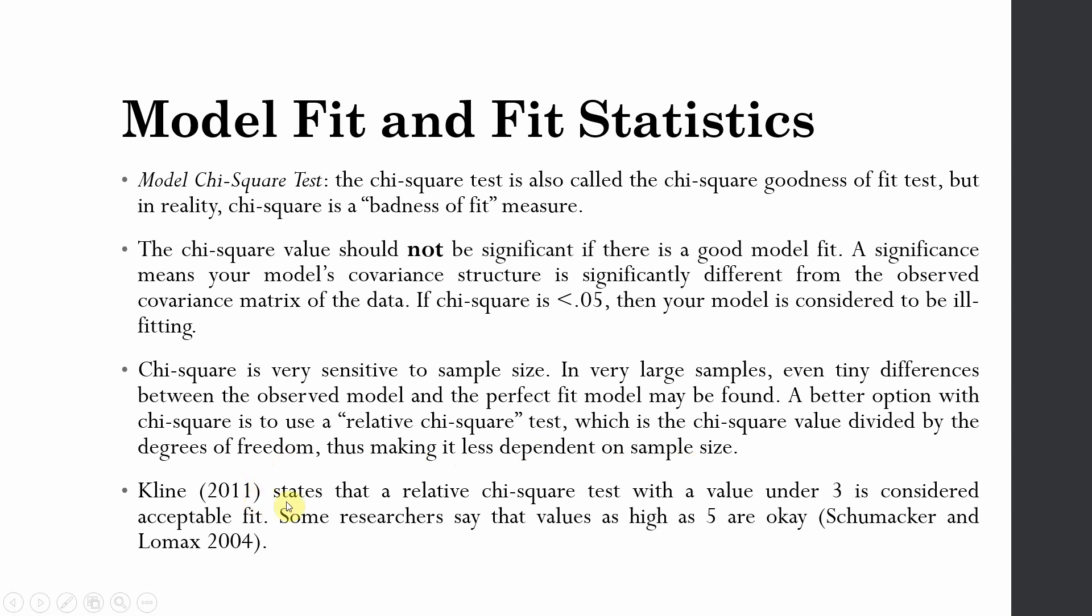Klein in 2011 stated that relative chi-square value shall range between 3 to 5. If it's between 3 to 5, you can say your model is a good fit.